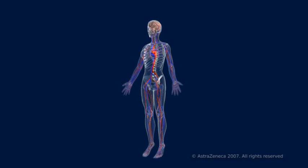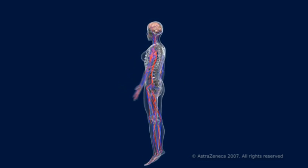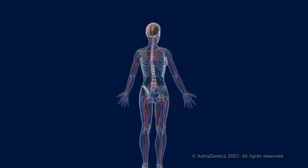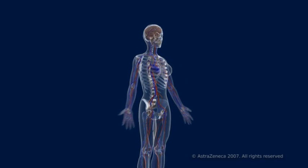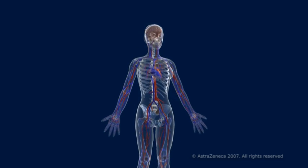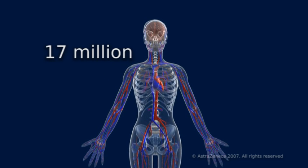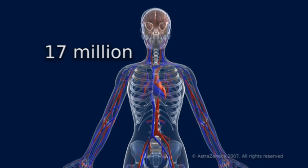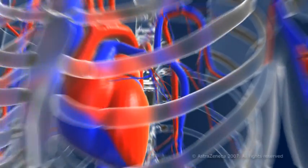Atherosclerosis is the build-up of fatty deposits, including cholesterol, in the walls of arteries. It's a major cause of cardiovascular disease, including stroke and heart attack, and contributes to the death of around 70 million people worldwide every year. This short presentation illustrates the key stages in its development and its main impact on cardiovascular health.